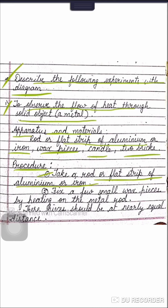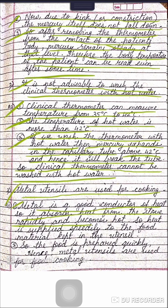Question number three: metal utensils are used for cooking. Metal is a good conductor of heat, so it absorbs heat from the stove rapidly and becomes hot. Heat is supplied speedily to the food material kept in the utensil, so the food is prepared quickly. Hence, metal utensils are used for cooking.